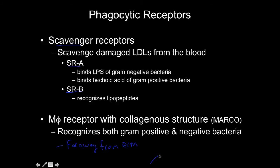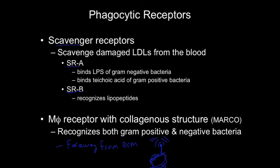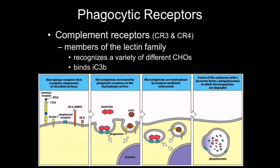MARCO extends far from the extracellular membrane — think of it like a tower getting a very clear signal. This means it can bind pathogens effectively and isn't confused by the clutter near the cell surface, since the extracellular membrane is such a densely populated place.